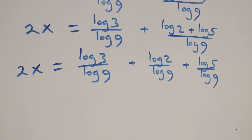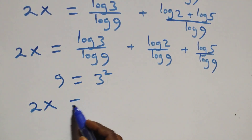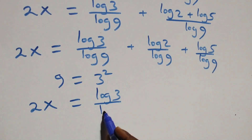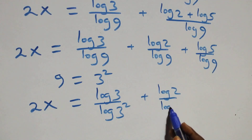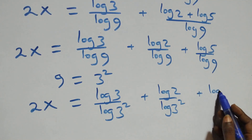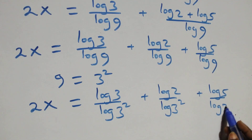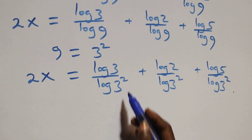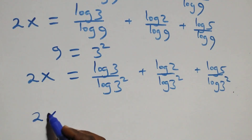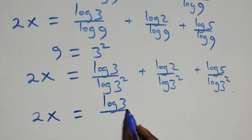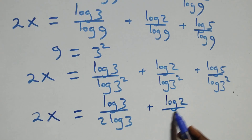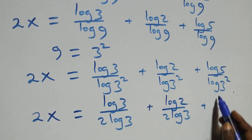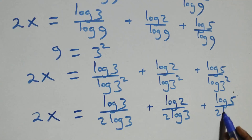From here, we can write 9 as 3 times 3, that is 3 squared. So we have 2x equals log 3 over log(3²) plus log 2 over log(3²) plus log 5 over log(3²). Applying the power rule of logarithm, the exponent 2 comes down: 2x equals log 3 over 2 log 3 plus log 2 over 2 log 3 plus log 5 over 2 log 3.